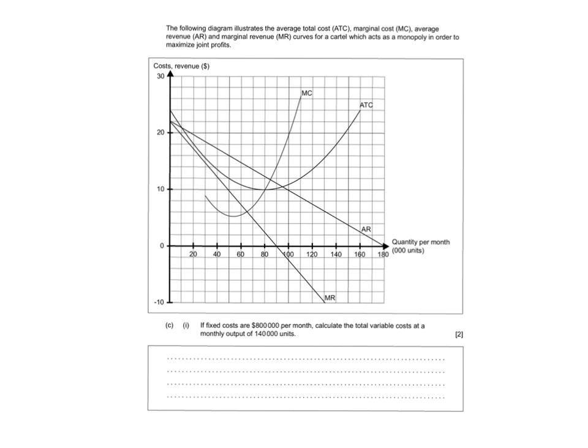Total cost is equal to total fixed cost plus total variable cost. Now, from the information given in the diagram, we have some cost curves, we have marginal cost, which isn't necessarily helpful to us here, and we also have average cost or average total cost, which we can use to calculate the total cost at the output of 140,000 units per month.